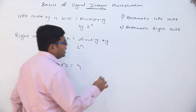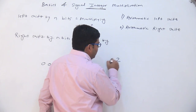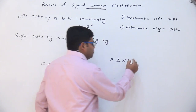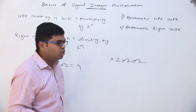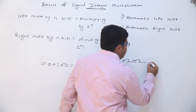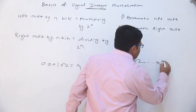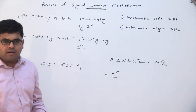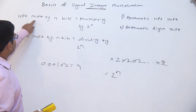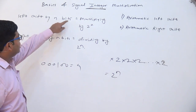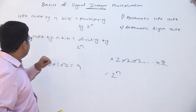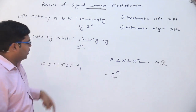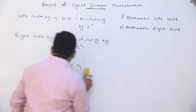You shift by 1 bit, it gets multiplied by 2. Again shift by 1 bit, again it will be multiplied by 2. Again shift by 1 bit, again it gets multiplied by 2. Do it n times, it will get multiplied by 2 n times, which is multiplying by 2 to the power n. That is why left shifting by n bits means multiplying by 2 to the power n and right shifting by n bits means dividing by 2 to the power n.